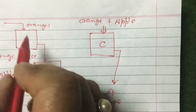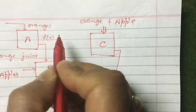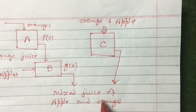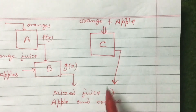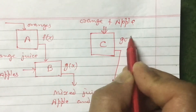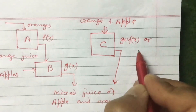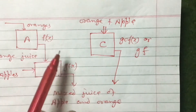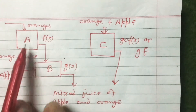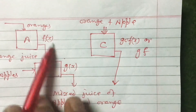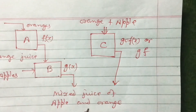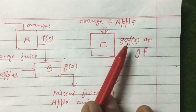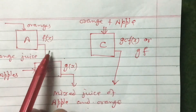So, let us say the function performed by A is f(x), and the function performed by B is g(x). Then the combined product is the same as the function performed by C, which will be g of f(x), or simply gf. So g(f(x)), or gf, is the composite function of f(x) and g(x).